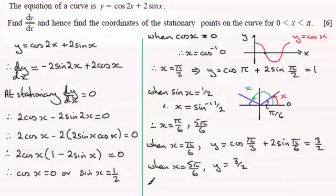So therefore, when it comes to writing down the stationary points, I'll just abbreviate it stat points, then the coordinates are going to be when x is π upon 2, we've got 1, so it's π upon 2, 1. We also had the one here when x was π upon 6.